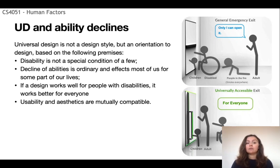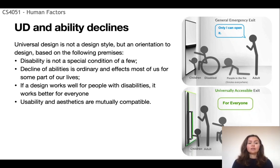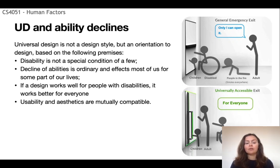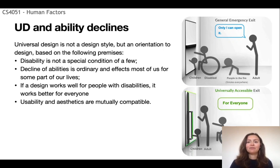Essentially, universal design is not a design style but an orientation to design, based on the premise that disability is not a special condition of a few. Decline of abilities is ordinary and can affect most of us at some point in our lives. If design works well for people with disabilities, it also works well for everyone, and usability and aesthetics are mutually compatible concepts. Universal design is driven by empathy — designers who feel empathy for different types of users in different types of situations and circumstances.